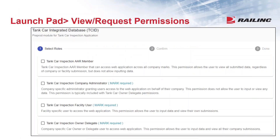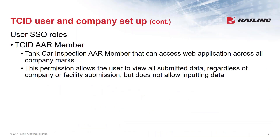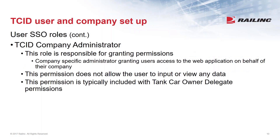There are four roles for the TKID application. The first is the AAR Member role - they can see across all companies, viewing data to assess the health of the fleet. They can view data but cannot submit any data. Very few people will have this role - about two or three people from the AAR.